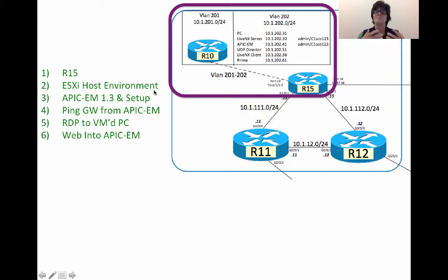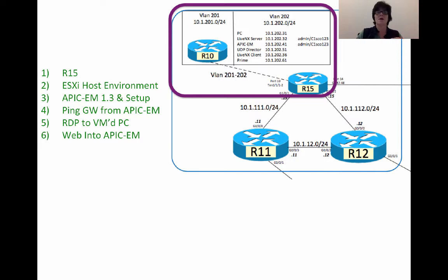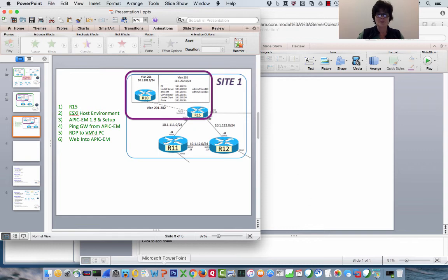For today, we're just going to get the APIC EM up and set up. The APIC EM is at 10.1.202.41, with a default gateway of 10.1.202.1. We'll set it up, accept the agreements, and once it's built, we'll ping the gateway from the APIC EM CLI, then RDP into a dual-NIC VM to web into the APIC EM.